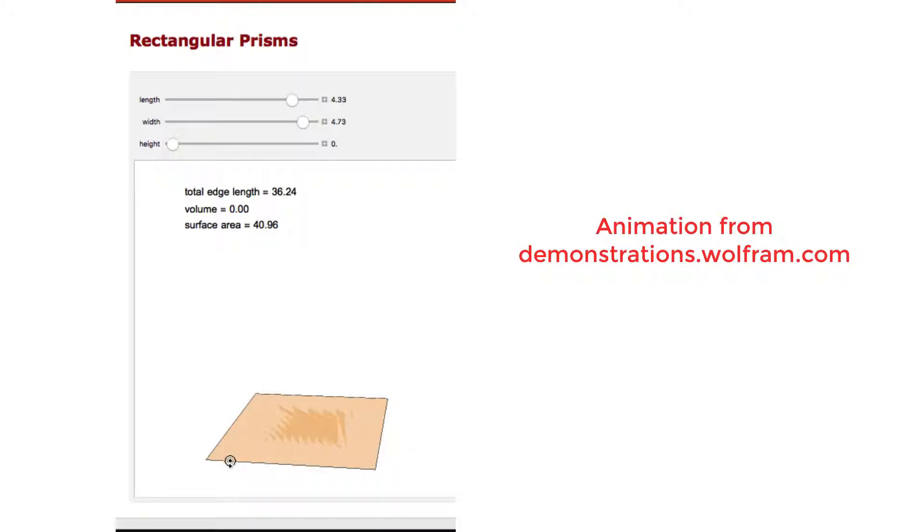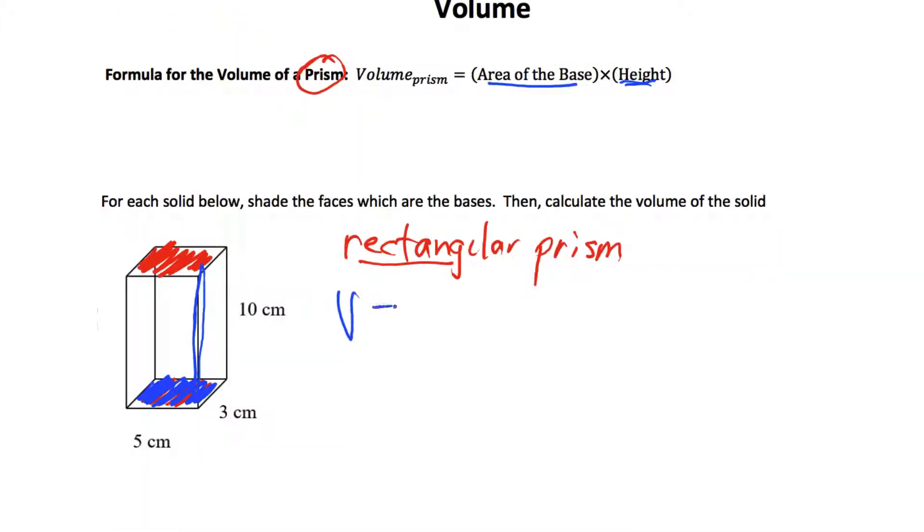To get the volume, I take the area of this two-dimensional shape, in this case length times width, area of the base, and I multiply it by the height. It's like I'm reaching or making layers from the bottom base up to the top base. So this length that I'm drawing out is the height of my prism. So I do the area of the base multiplied by the height. So the volume is the area of the base times the height.